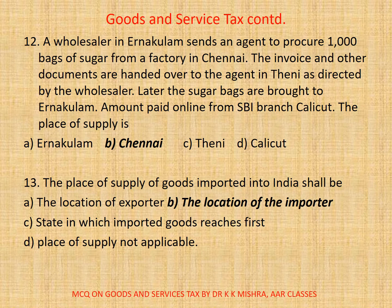Question 12: A wholesaler in Arnaquilam sends an agent to procure 1000 bags of sugar from a factory in Chennai. The invoice and other documents are handed over to the agent in Chennai as directed by the wholesaler. Later the sugar bags are brought to Arnaquilam. Amount paid online from SBI branch Calicut. The place of supply is — A. Arnaquilam, B. Chennai, C. Theni, D. Calicut. Here correct option is B: Chennai.